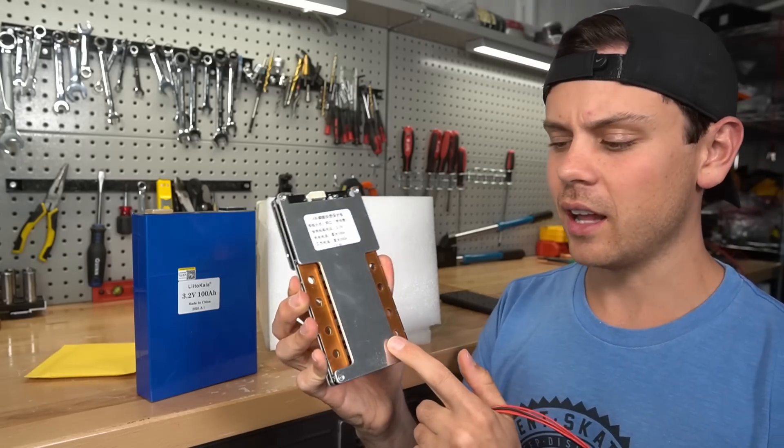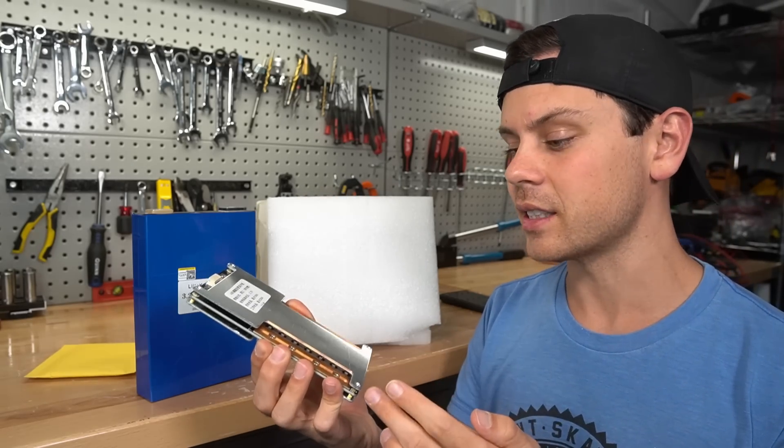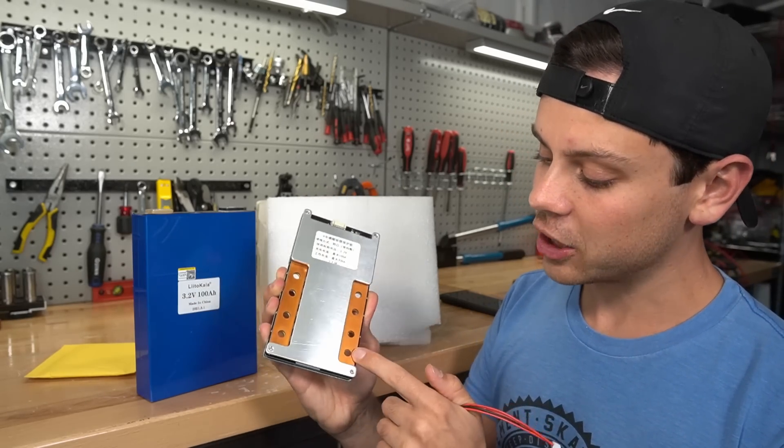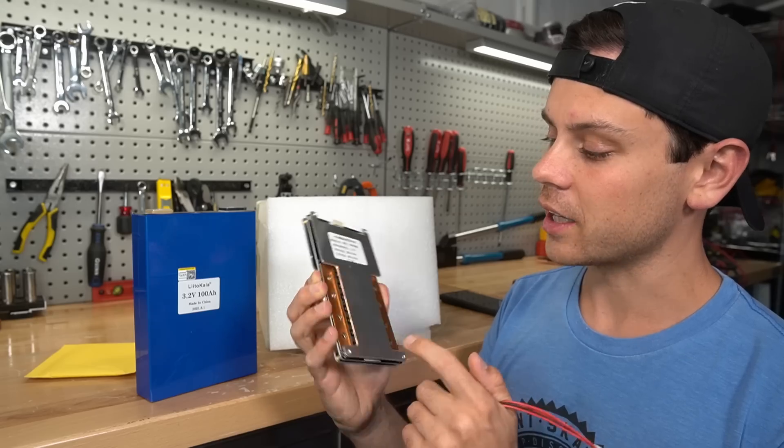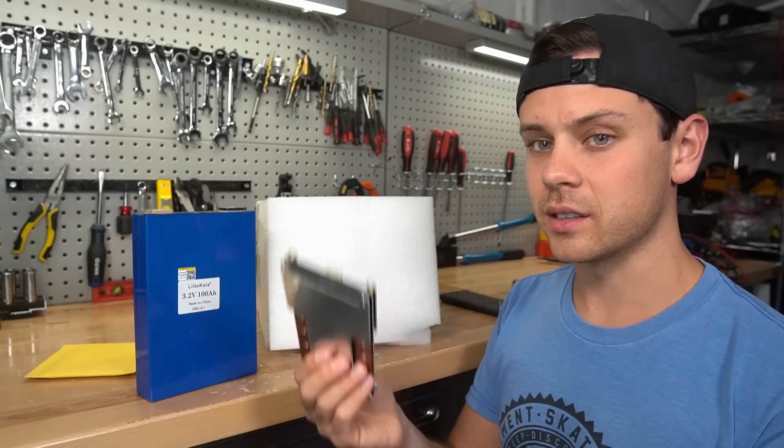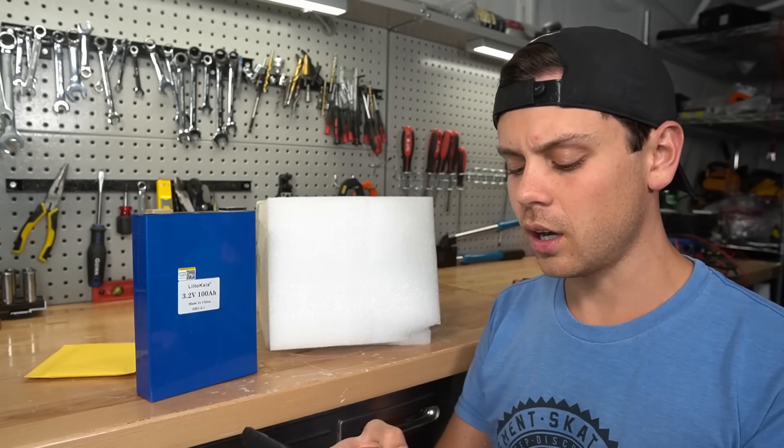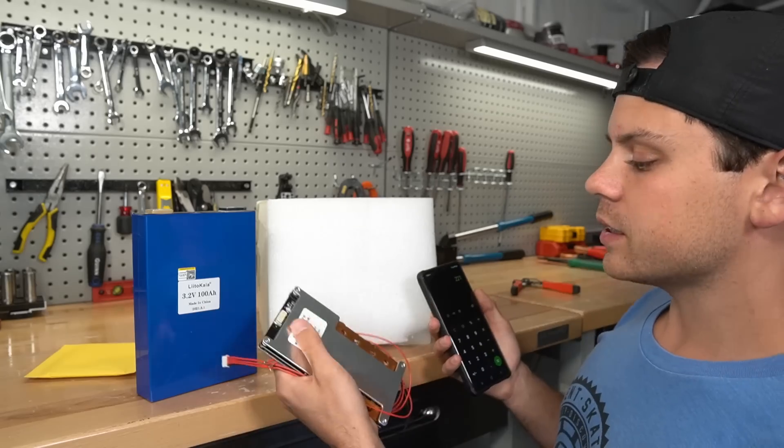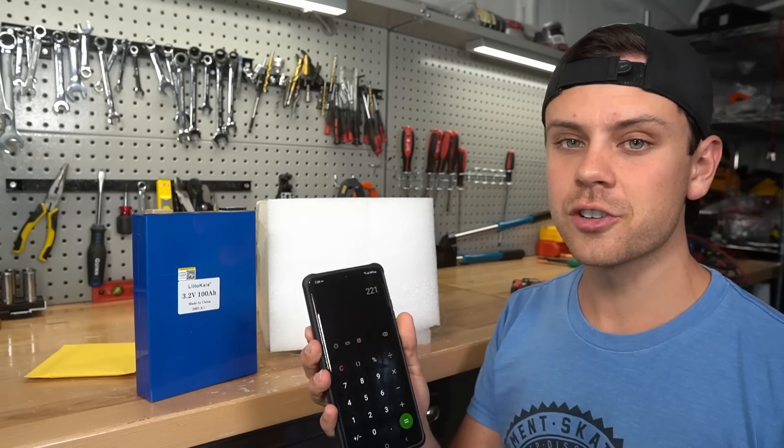For being the cheapest one on AliExpress, which I'm sure you could find this exact same BMS, it looks pretty good. These are some beefy bus bar connections. So let's see what the total cost of this battery is. With these cells and the BMS together, it's $221.